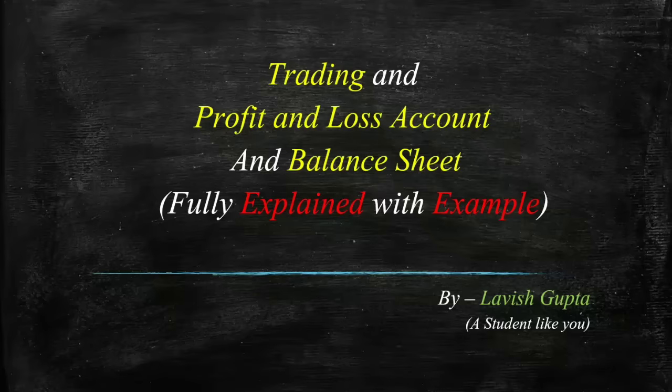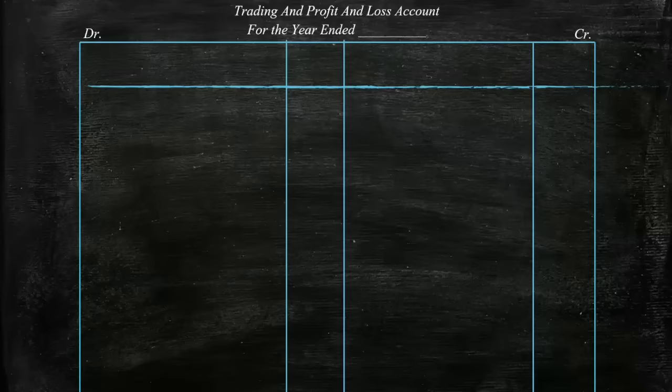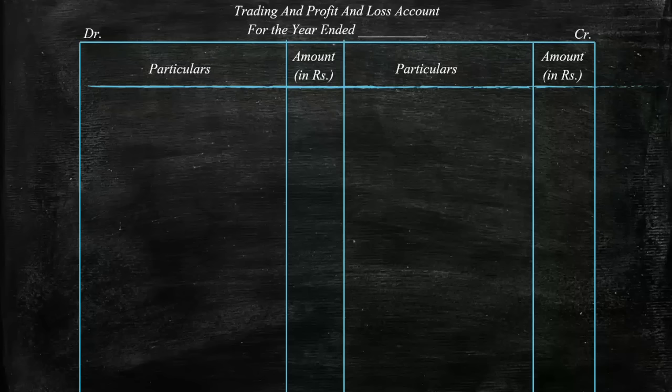Before starting with the question, here is a quick format of the trading and profit and loss account. It starts with the heading 'Trading and Profit and Loss Account for the year ended' — for example, for the year ended 31st March 2016. It is prepared in a T format — T as in the English alphabet — which includes particulars and amount on both sides. I used to call it PAPA, P-A-P-A, which is an Indian word for father.